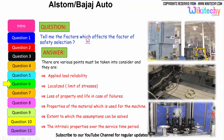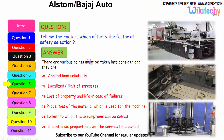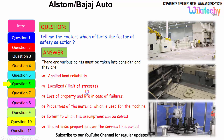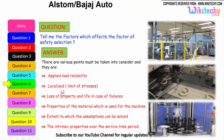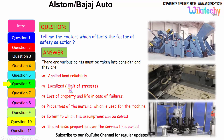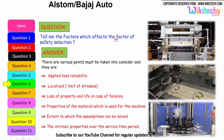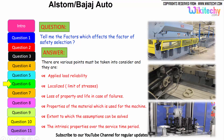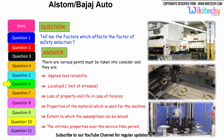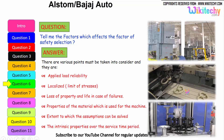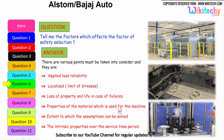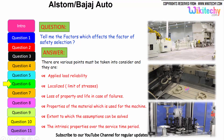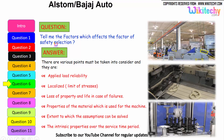Now let us see the factors which affect the factor of safety selection. The factors include: reliability of the applied load, the limit of stresses thus localized, loss of property and life in case of failures, properties of the material used for the machine, the extent to which assumptions can be resolved — how much it will extend or compress — and the intrinsic property of the material over its service time period.